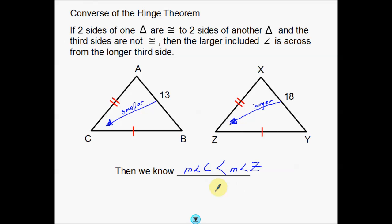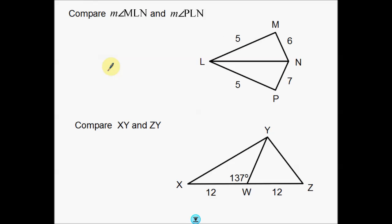So that's the hinge theorem and the converse of the hinge theorem. Now I'm going to go over a couple of examples that use these theorems. The first thing you've got to do whenever you're comparing the measurement of angles or the length of sides is recognize your triangles — where are they? You also have to make sure you have those two pairs of congruent sides.